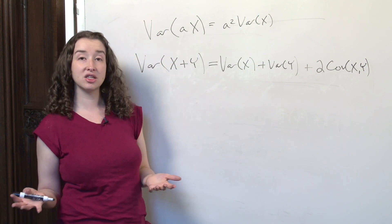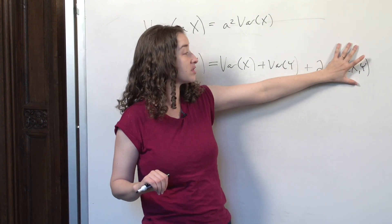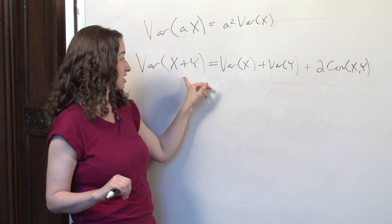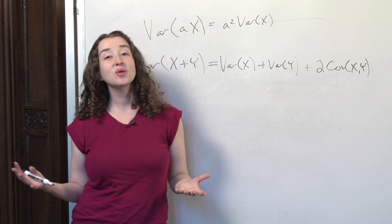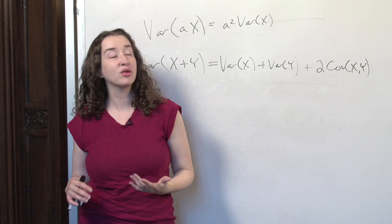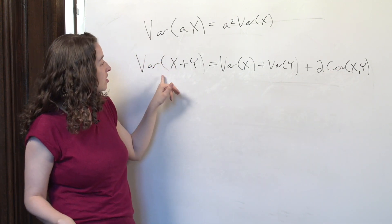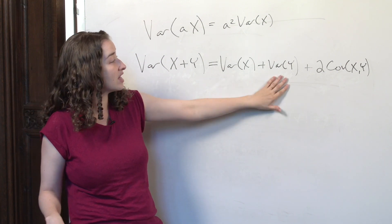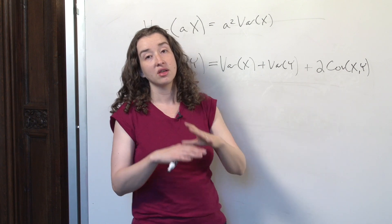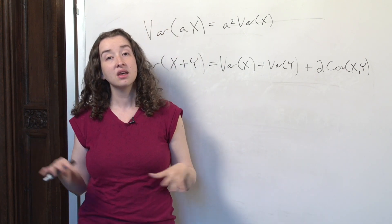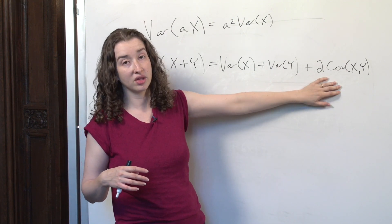If we're drawing from a hat to determine who gets what bonus, x and y are independent, and the covariance term is equal to zero, so the variance of x plus y is less than it was when this was a positive number. If we're purposely negatively correlating bonuses and income, this covariance term is going to be negative, so the total variability of x plus y equals the variance of x plus the variance of y minus something — there's going to be less variability in the overall amount of money people are making because of that negative correlation.